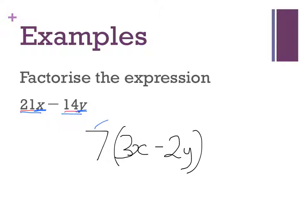Again, if we need to check we can try expanding it. Okay, 7 times 3 is 21 and then I've got an x on the end. 7 times negative 2 is negative 14 and then I've got a y on the end. Look at that. That marries up to that.